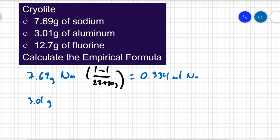I have 3.01 grams of aluminum. The molar mass of aluminum is 26.982 grams. So I have 0.112 moles of aluminum.